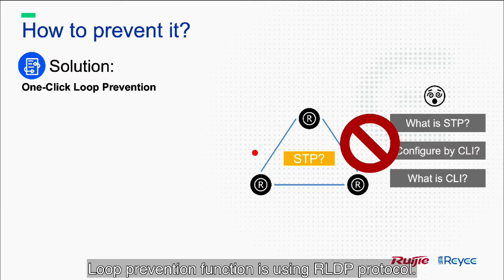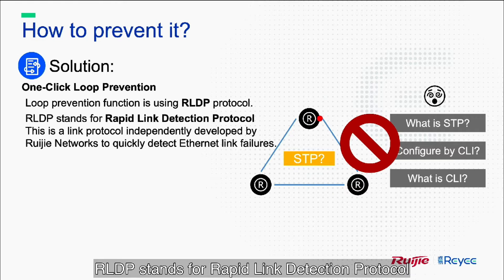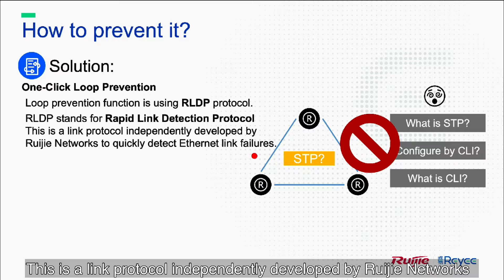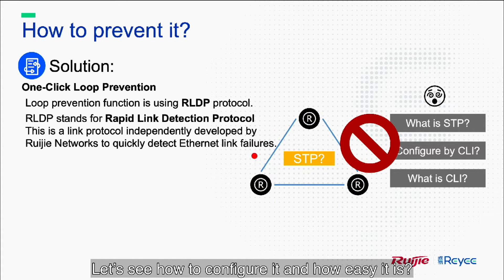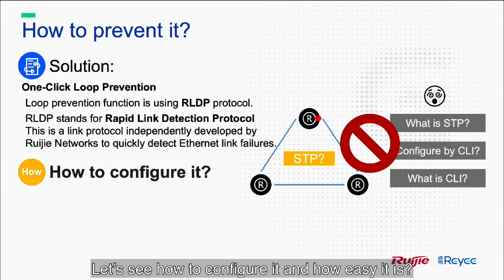The loop prevention function uses RLDP protocol. RLDP stands for Rapid Link Detection Protocol. This is a link protocol independently developed by Ruijie Networks to quickly detect Ethernet link failures. Let's see how to configure it and how easy it is.